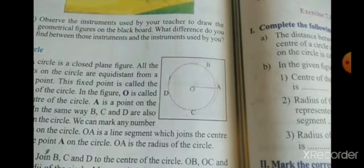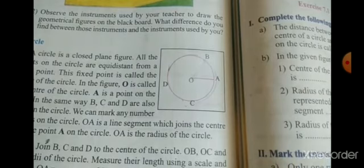OA, OC, OD, OB are called the radii. Now we are taking the scale, joining the OC, OD, and OB.